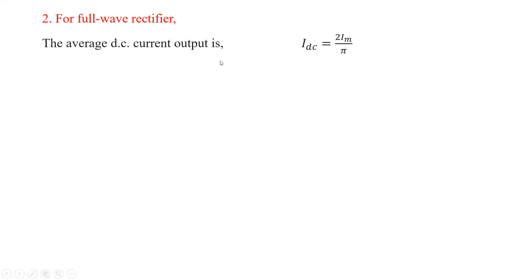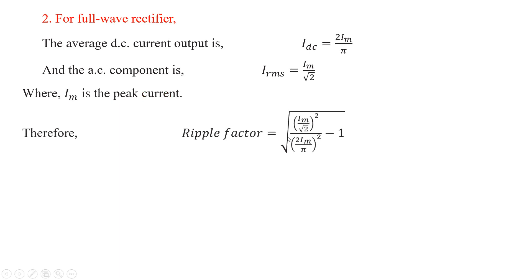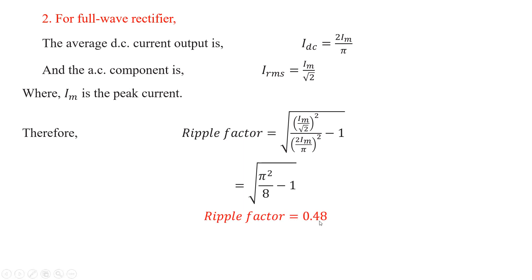For the full wave rectifier, the average DC output current is I_dc = 2I_m / π, because both cycles are converted to DC. The RMS value is I_rms = I_m / √2, since the full wave is converted to DC. Substituting into the ripple factor formula: γ = √((I_m/√2)² / (2I_m/π)² − 1) = √(π²/8 − 1).